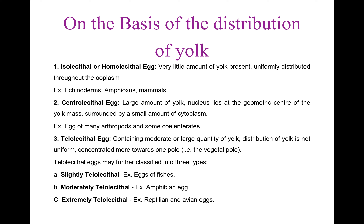Now, Extremely Telolecithal Eggs. In this type of egg, due to heavy deposition of yolk, the entire vegetal hemisphere and a major portion of the animal hemisphere are occupied by yolk. And due to this extremely uneven distribution of yolk, the ooplasm and nucleus are displaced towards the animal pole. This type of situation is found in reptilians and birds.